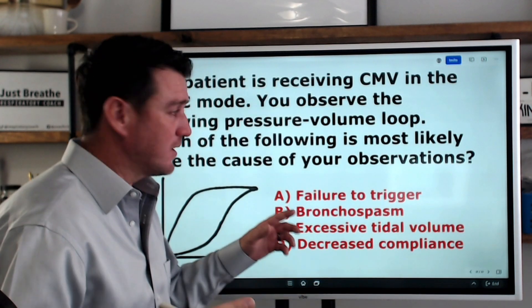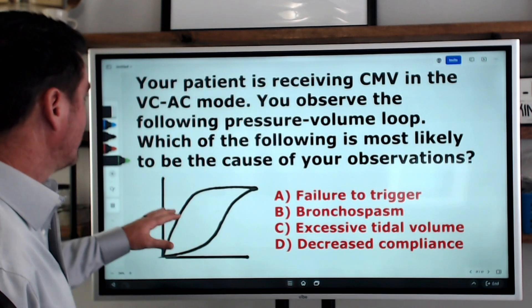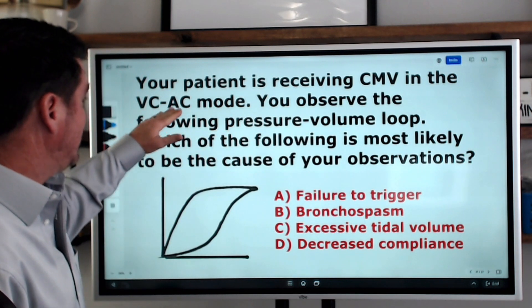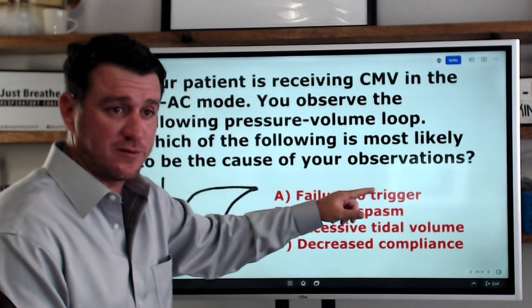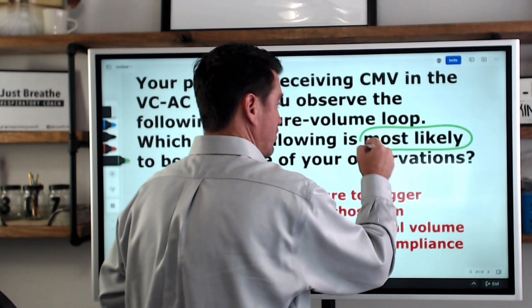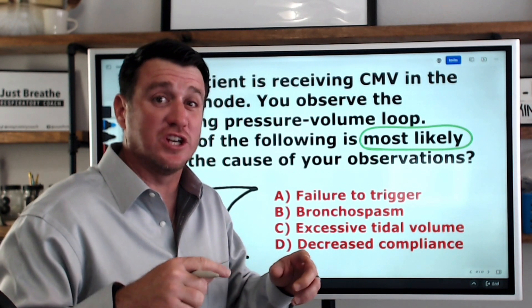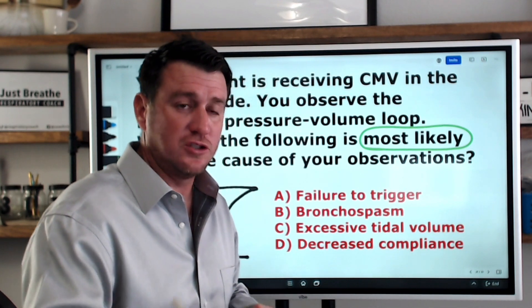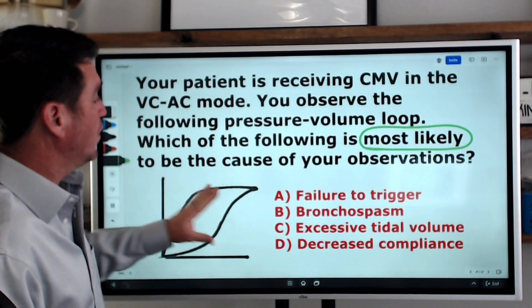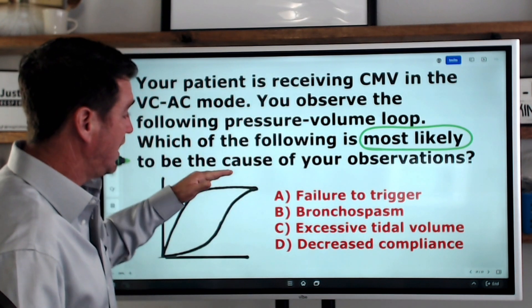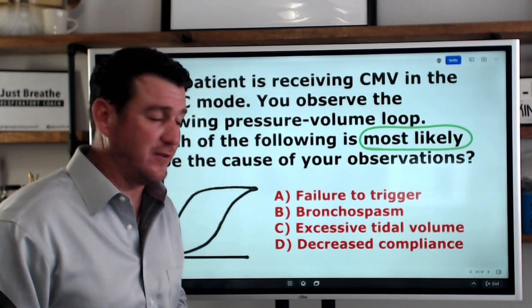Alright, so let's take a look here at a practice question. We can break this question down and see what it's going to ask us related to the pressure volume loop. If your patient is receiving continuous mechanical ventilation in the VC AC mode, you observe the following pressure volume loop. Which of the following is most likely to be the cause of your observations? Now, first thing you want to do is circle some key words here. Most likely. You see, sometimes some people who write test questions, they get tricky and say which of the following may be the least likely. So you want to always be certain that you're answering the question. The question is asking, you see this pressure volume loop, which of these four answers is the most likely to be the cause of this finding? Pause this video right now, see if you know the answer and come back, see if you get it correct.